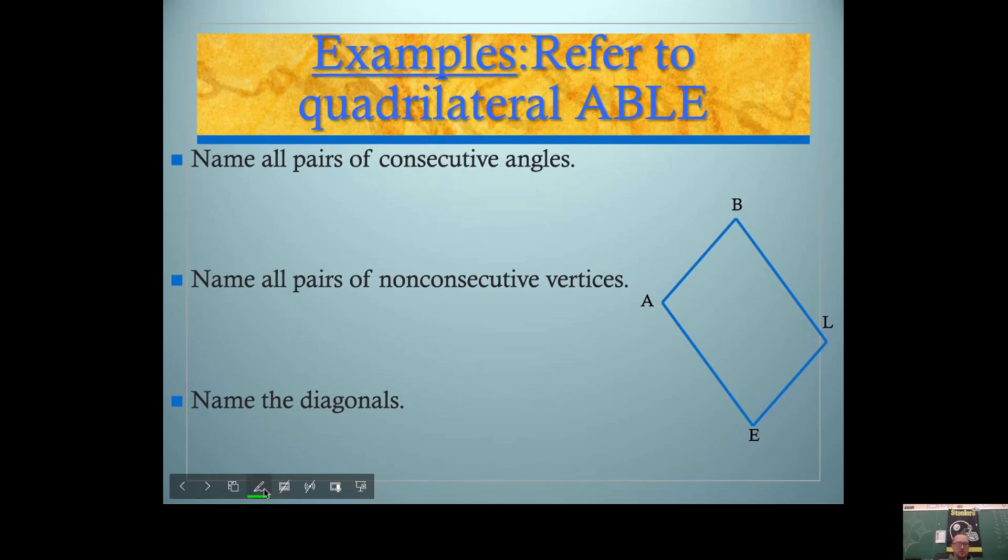So let's do a couple examples. I'll change my color so we can see it a little better. We want to name all pairs of consecutive angles. So here's my shape, quadrilateral A, B, L, E. If I have this name, then I obviously know what's consecutive because remember you have to name them with the vertices in a consecutive order. Angle A and angle B are consecutive. I can tell because they're right next to each other. I also know that angle B is next to angle L. Angle L is also next to angle E.